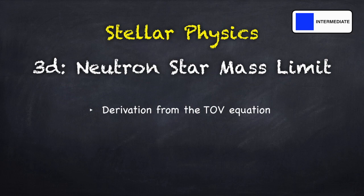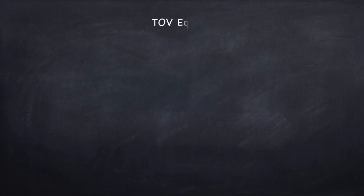The TOV equation is the equation of hydrostatic equilibrium in general relativity, and I derived it in the previous video, Stellar Physics 3C. So I recommend you watch that video if you haven't seen it yet. I've rated the physics level in this video as intermediate.